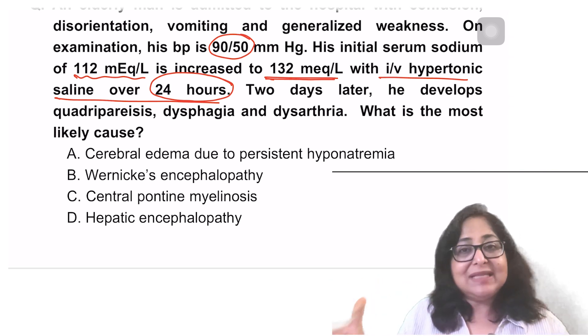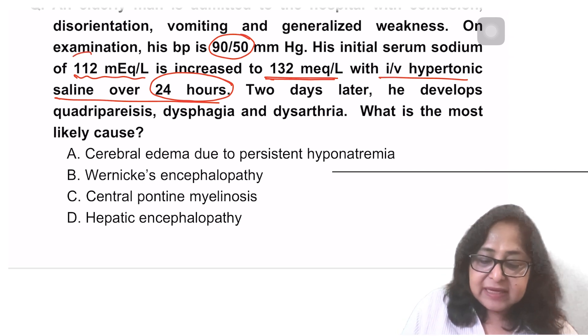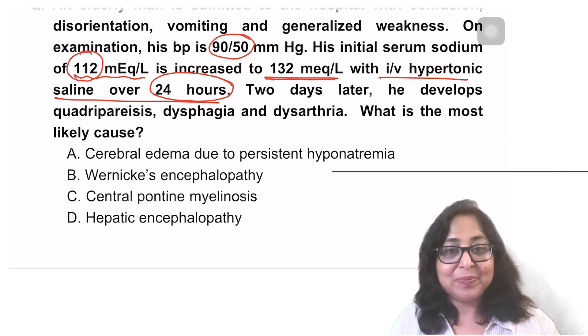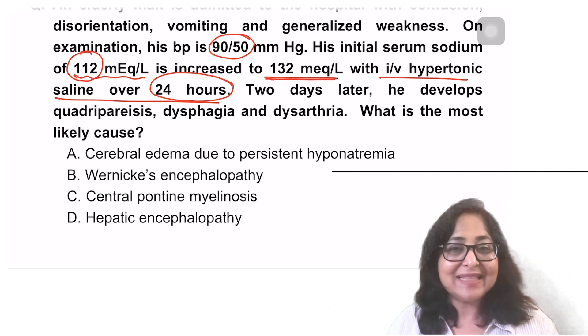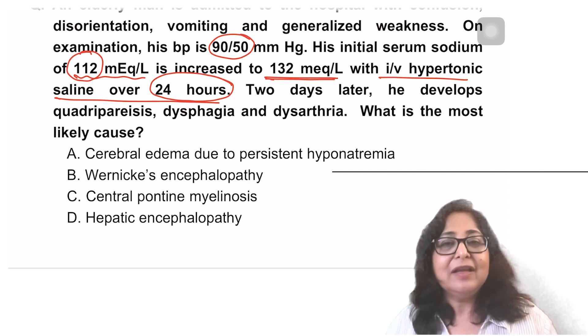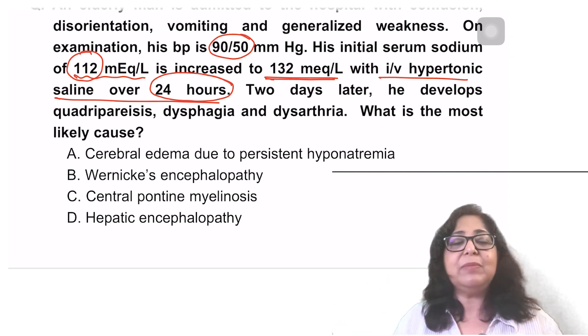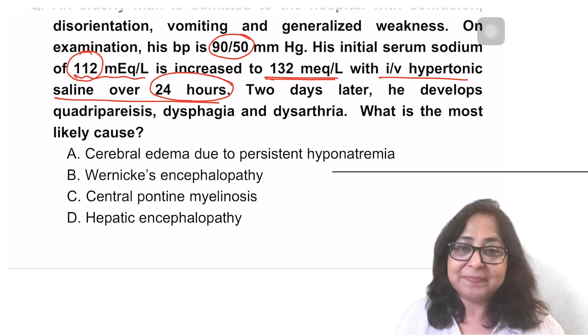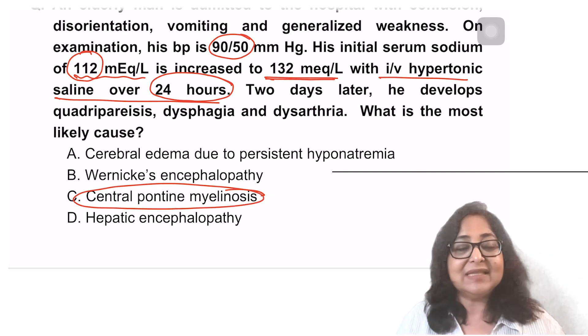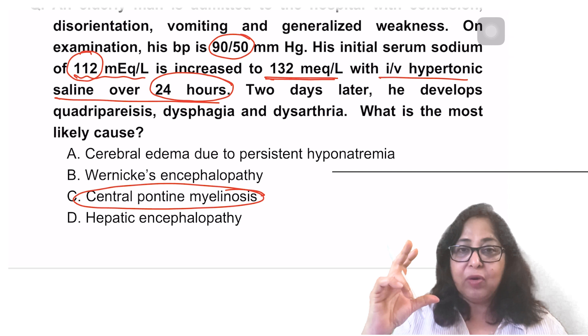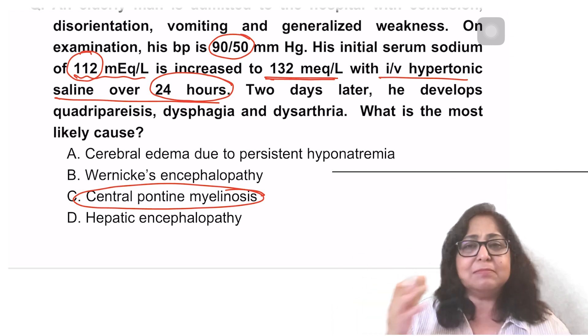Whenever a patient presents with hyponatremia, the first day you can do a correction of 8 to 10 mEq per litre. That means, first day I could have corrected his sodium from 112 to 122. Second day, 5 to 6, from 122, I could have taken it to 127. Third day, another 5. I should have corrected his sodium over at least 3 to 4 days. In this case, there is a very rapid correction of hyponatremia which has been done.